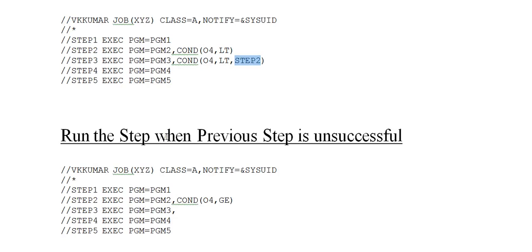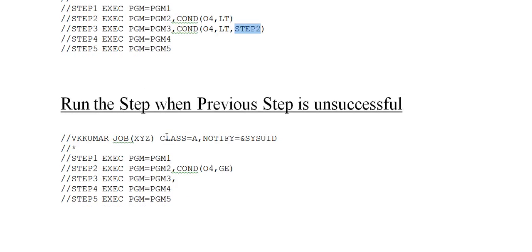The next scenario is: run the step when the previous step is unsuccessful — quite the opposite. You have the same five steps. If COND is coded as (0, 4, GE), it will obviously bypass the step if the return code is greater than or equal to 4.